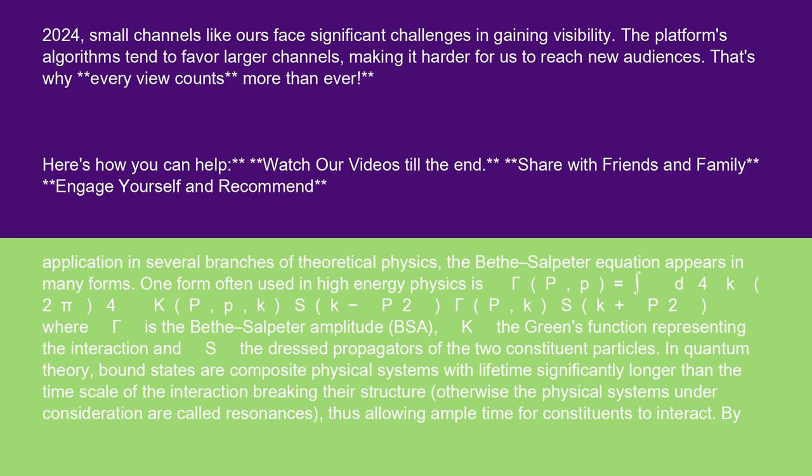The Bethe-Salpeter Equation appears in many forms. One form often used in high-energy physics is gamma(p,p) equals integral d4k/(2pi)^4 K(p,p-k) S(k-p/2) gamma(p,k) S(k+p/2).